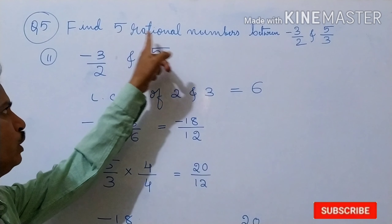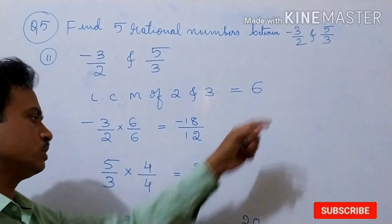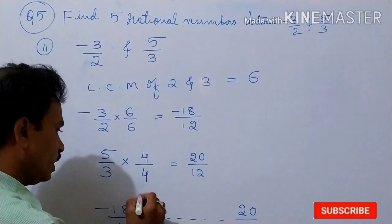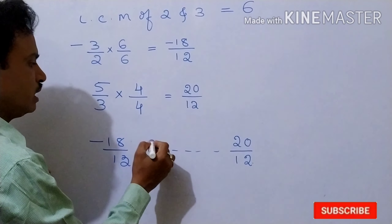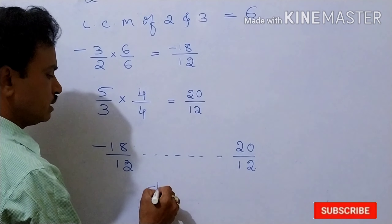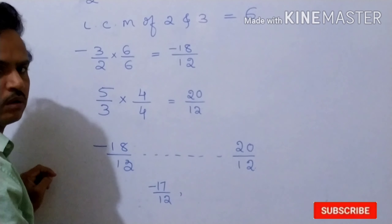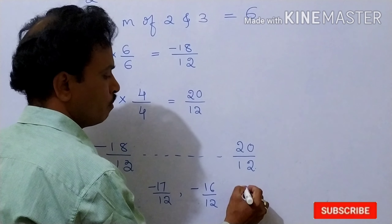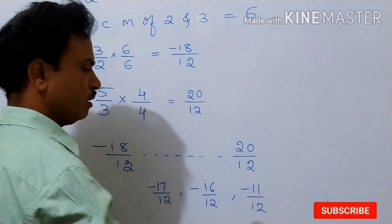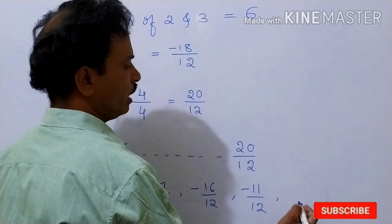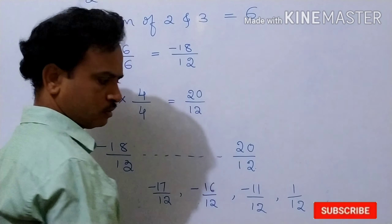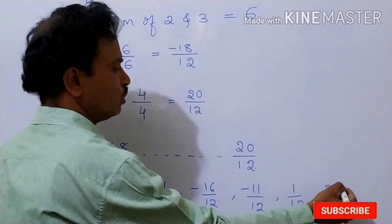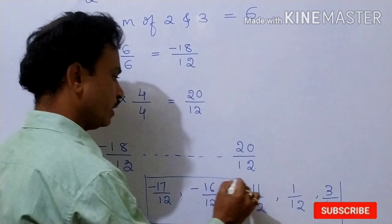Now we want only 5 rational numbers in between these 2 numbers. Any numbers you can take in between them. Minus 18 is there, so we can take: minus 17 by 12, then minus 16 by 12, then minus 11 by 12 — any number you can take — then 1 by 12, then 3 by 12. That's 1, 2, 3, 4, 5 numbers. We got 5 rational numbers.